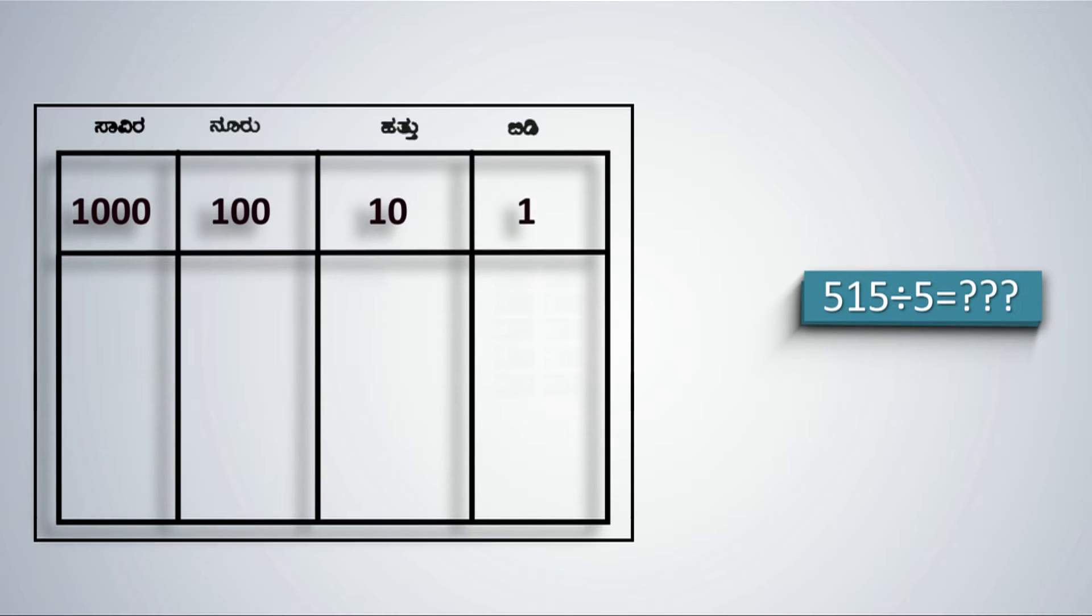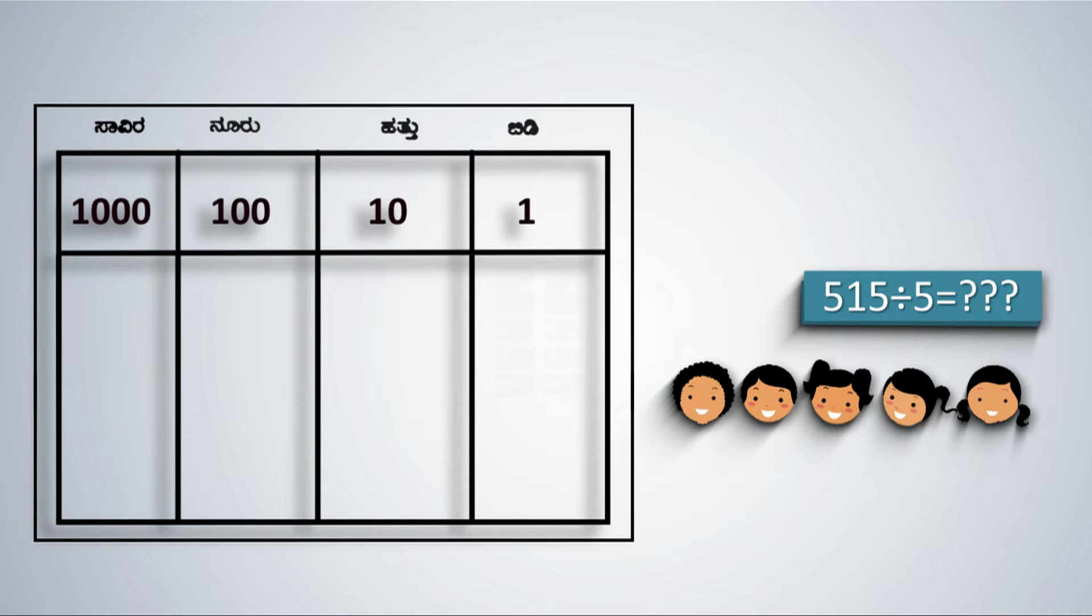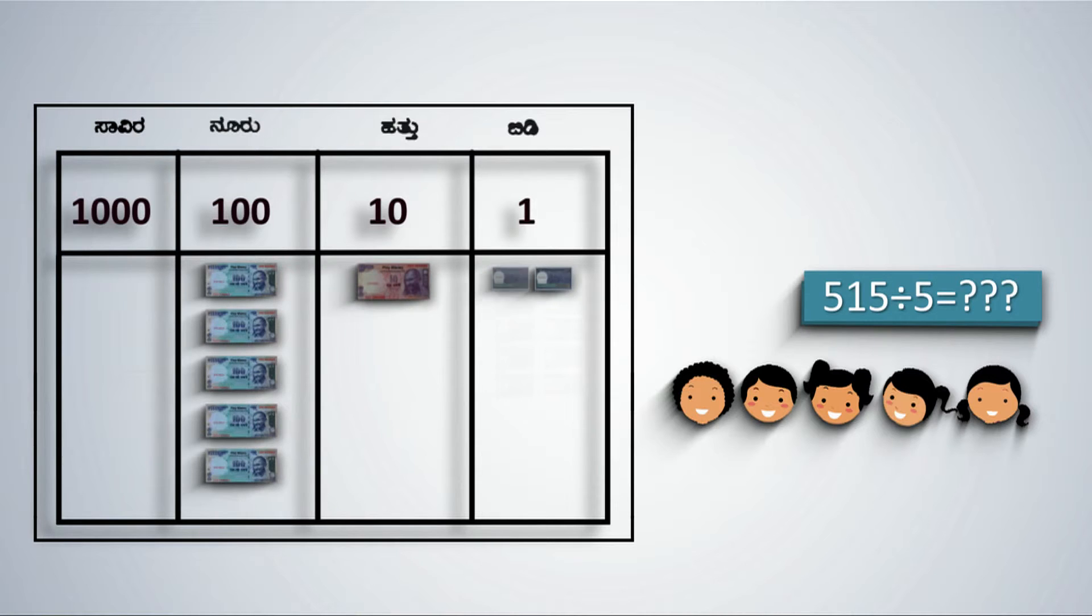If 515 rupees have to be distributed among 5 students, how much will each one get? Students must call out the expanded form of the number. 515 is 5 hundreds, 1 ten and 5 one rupee notes.